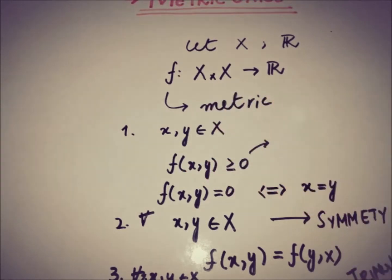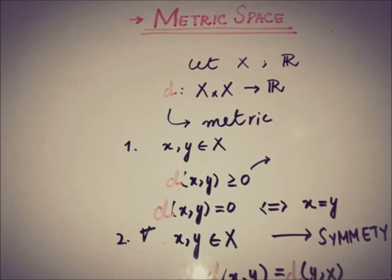So if a function has these three properties, then a function is said to be a metric on a set X. And together X and D, the function that was defined, the metric, we can say that (X, D) is said to be a metric space.